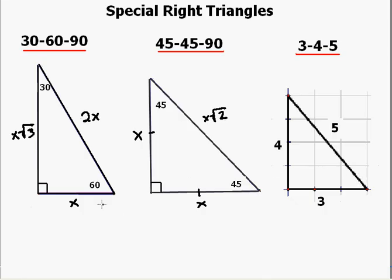We're going to go through examples of these three types of triangles to clarify how this is used. For the 30-60-90, we'll label the sides: the short leg (SL), the long leg, and the hypotenuse.